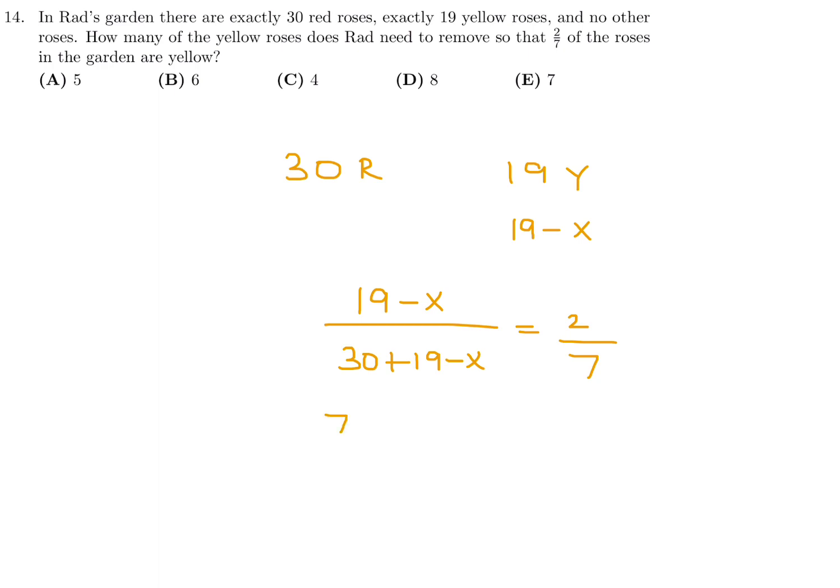So cross multiply, and I have 7 times 19 minus x, and 2 times 49 minus x. This is 133 minus 7x is equal to 98 minus 2x. Bring the 7x over, and that will be 5x. 133 minus 98 is 35, so that means x is equal to 7. Number 14, that would be E.